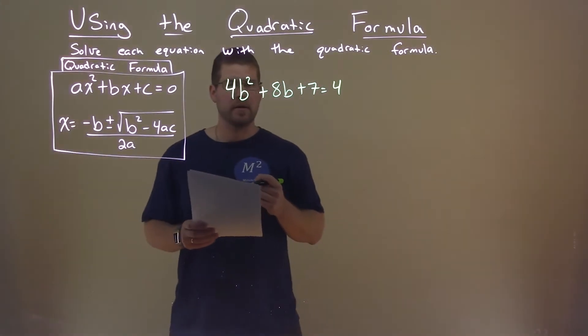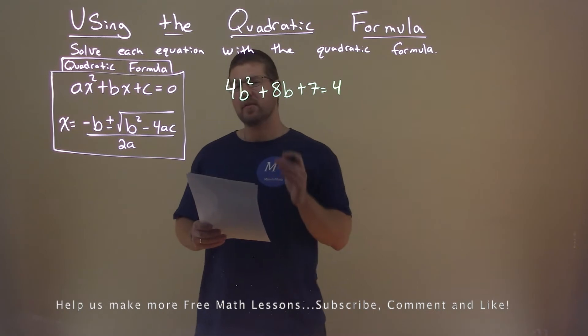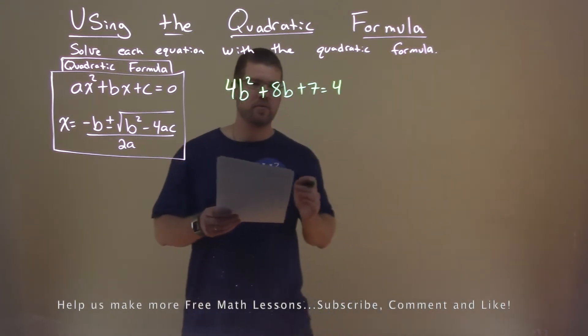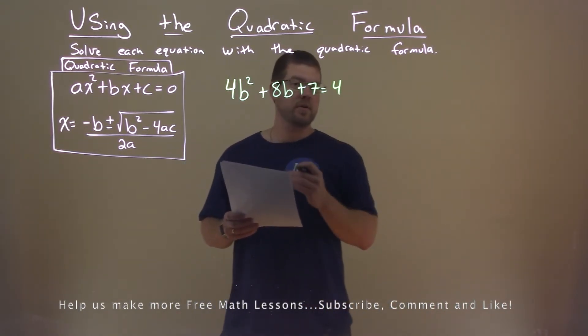We're given this problem right here: 4b squared plus 8b plus 7 equals 4, and we want to solve using the quadratic formula.